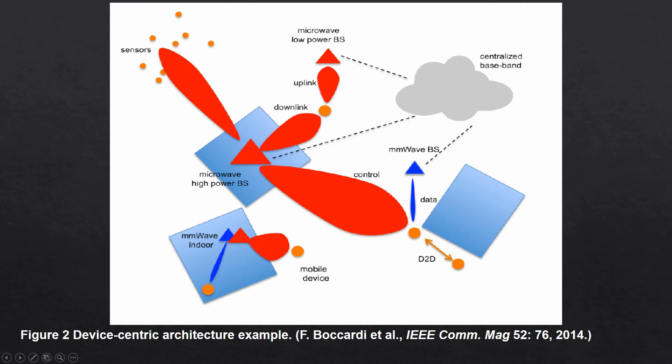Let us see figure 2 for this. In this figure, we can see the device-centric architecture: the microwave high power base station, the microwave low power base station and the millimeter wave indoor station — all linked with the mobile device, even sensors. A centralized baseband cloud is also linked with the mobile device, and it can also perform D2D operation.